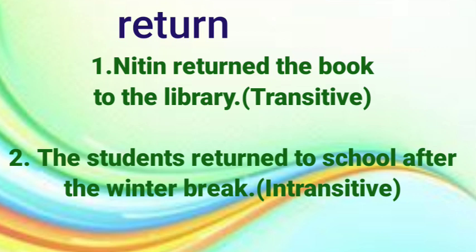To summarize: for a direct object we ask the question 'what' — that makes it a transitive verb. For intransitive verbs, we ask the questions when, where, how, or why — corresponding to time, place, reason, and manner.